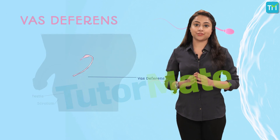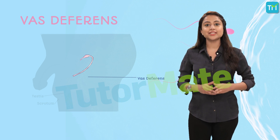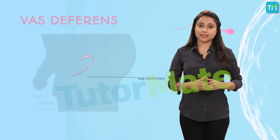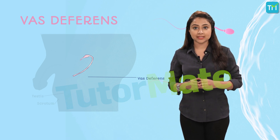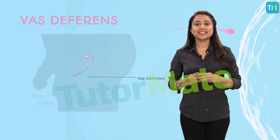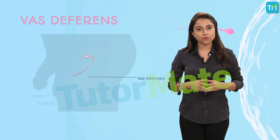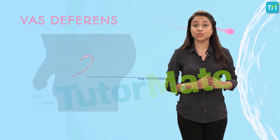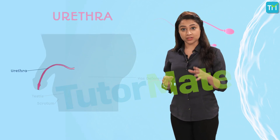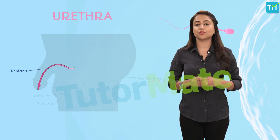Sperms coming from the testes are delivered through the vas deferens, which unites with the tube coming from the urinary bladder. Along the path of the vas deferens, the prostate gland and the seminal vesicle add their secretions to the sperm. These secretions make transportation easier by converting it into a fluid and also provide nutrition. The urethra starts from the urinary bladder and carries urine, and it also carries sperms from the vas deferens.